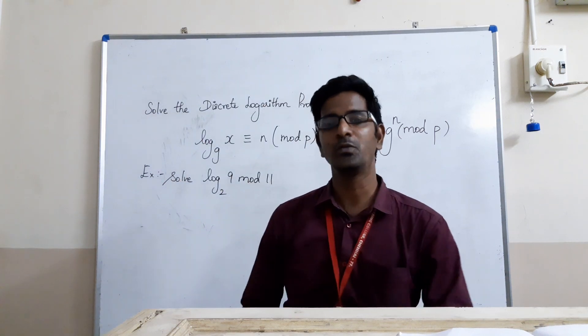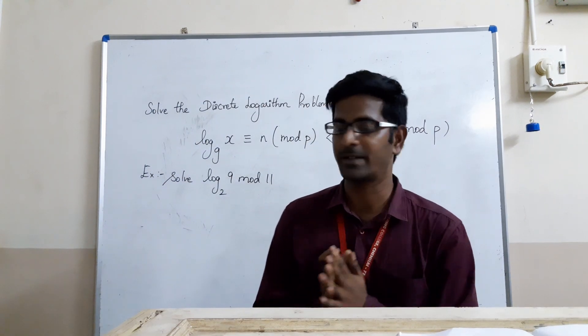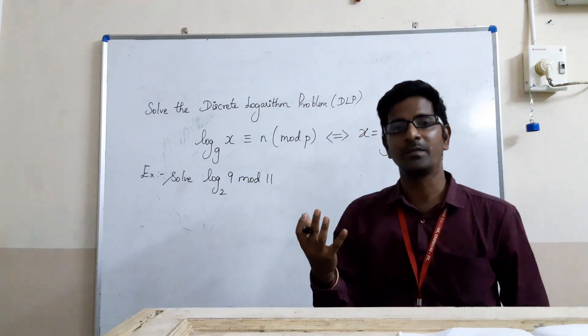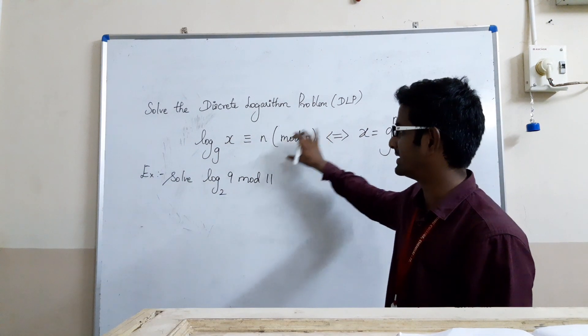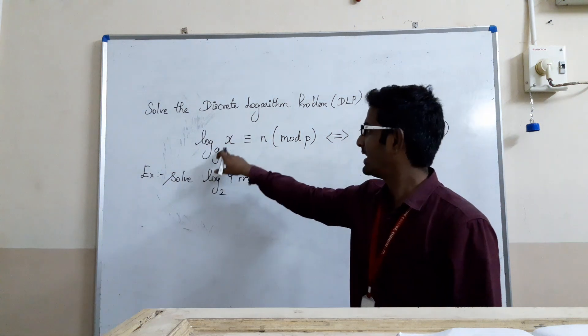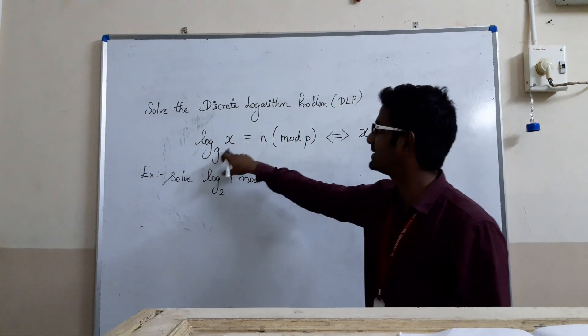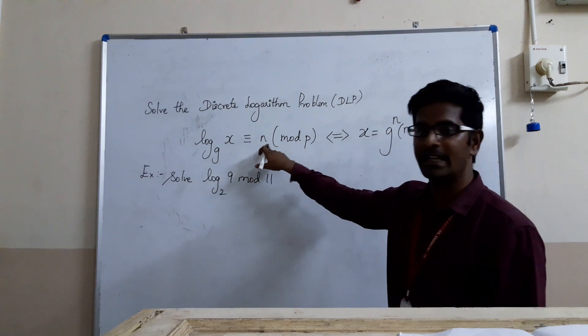Hello, now we shall see how to solve a discrete logarithmic problem. Generally, the discrete logarithmic problem involves equations like this: log_g(x), where g is the base and x is the number, and this part is congruent to n mod p.